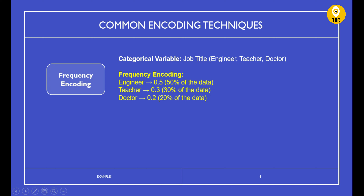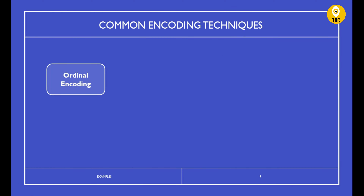Frequency encoding assigns each category a value based on its frequency in the dataset. For example, for a 'job title' column with values like engineer, teacher, and doctor, you measure how frequently each appears in the data. If engineers make up 50% of the rows, engineer is encoded as 0.5; teachers might be encoded as 0.3, and so on. The sum of all frequency values should equal 1, representing 100% of the data.